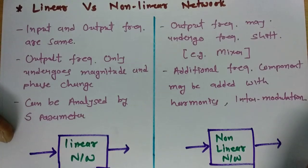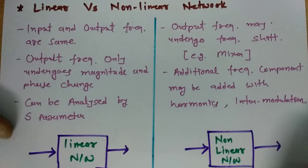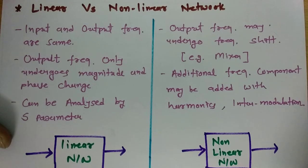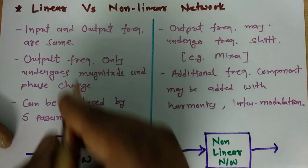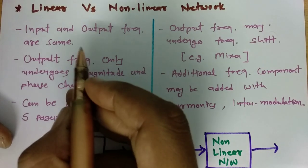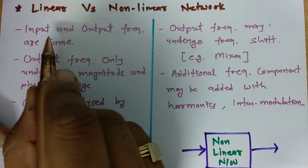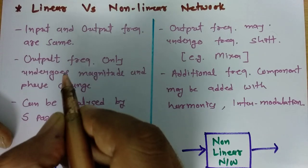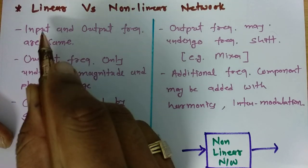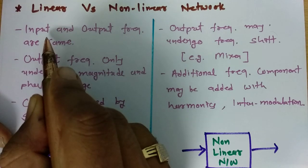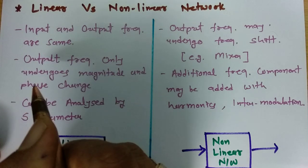In my previous video on spectrum analyzer, I already discussed that there are basically two types of networks: linear network and non-linear network. Linear networks are those where input and output frequencies are the same — input and output frequency are the same.